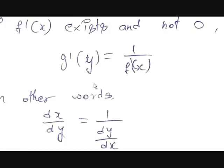Now let's see how to differentiate inverse functions. Differentiating a function means finding the change in that function divided by the change in its independent variable, as the change in that variable tends to zero. The general formula of differentiation: to differentiate f(x), it is the limit as h tends to 0 of [f(x+h) − f(x)] / h, where h is the change in the variable.